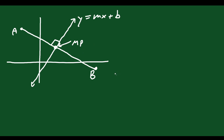So the way these questions often go is they give you points A and B, say that's a line segment, and ask you to give the equation of the perpendicular bisector. All you do is find the midpoint and then find the equation of the line going through that point at a 90 degree angle.